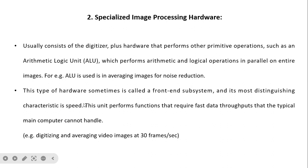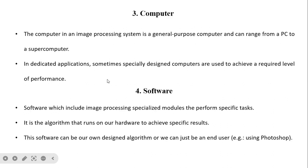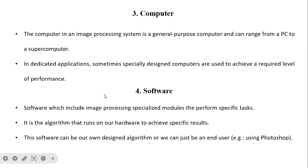Third is the computer. The computer in an image processing system is a general-purpose computer and can range from a PC to a supercomputer. In dedicated applications, specially designed computers are sometimes used to achieve the required level of performance.